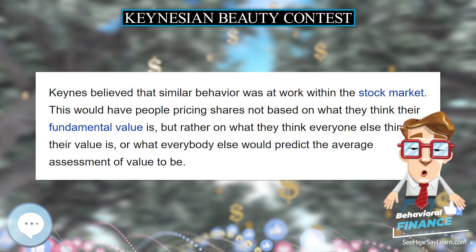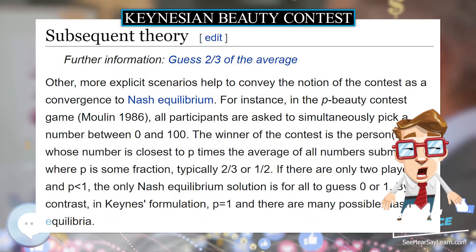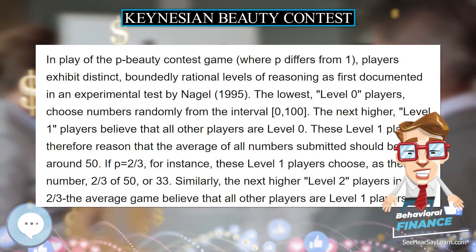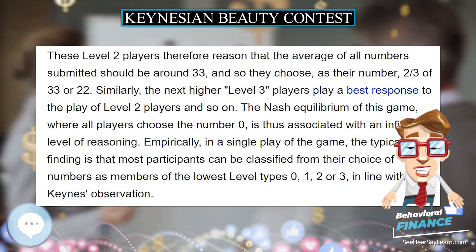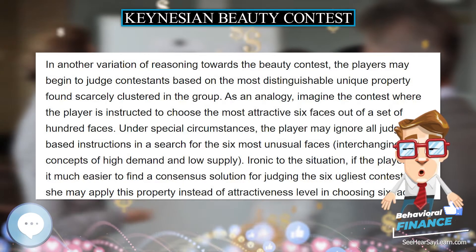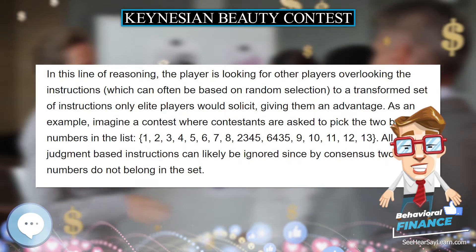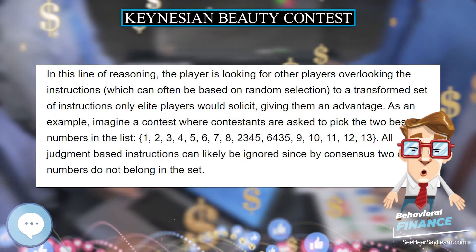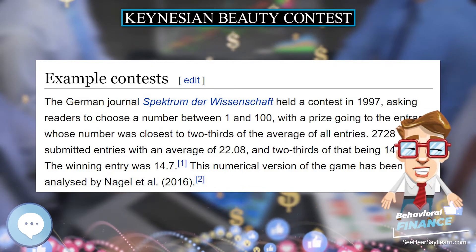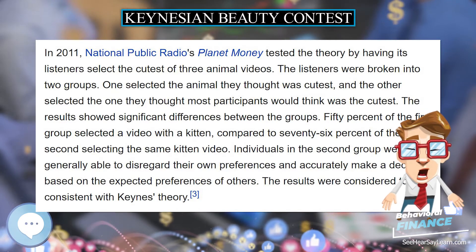National Public Radio's Planet Money tested the theory by having its listeners select the cutest of three animal videos. The listeners were broken into two groups. One selected the animal they thought was cutest, and the other selected the one they thought most participants would think was the cutest. The results showed significant differences between the groups. 50% of the first group selected a video with a kitten, compared to 76% of the second selecting the same kitten video. Individuals in the second group were generally able to disregard their own preferences and accurately make a decision based on the expected preferences of others. The results were considered to be consistent with Keynes' theory.